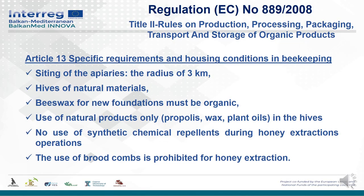Article 13: Specific Requirements and Housing Conditions in Beekeeping. The placement of apiaries is important: they must be in an area with a radius of at least 3 kilometers where no contamination sources exist — no industry waste or intensive agriculture. Natural materials must be used for new foundation; it must be organic. Only natural products may be used in the hives, such as propolis, wax, and plant oils. No synthetic chemical repellents during honey extraction, and use of brood combs is prohibited for honey extraction.